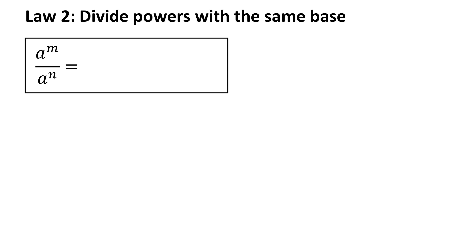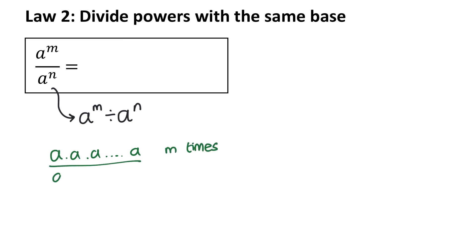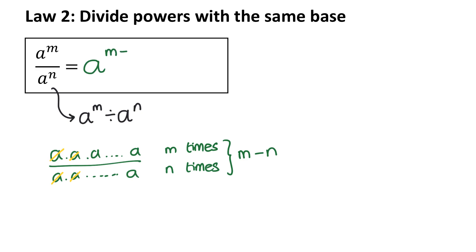The second law of exponents refers to dividing powers with the same base. The rule has a to the power of m divided by a to the power of n, where a is the same base but with a different exponent. If I've got a times a times a, m times, dividing by a times a times a, n times, and I simplify the fraction, the number of a's remaining would be m minus n all multiplied together. So the rule is a to the power of m divided by a to the power of n equals a to the power of m minus n.